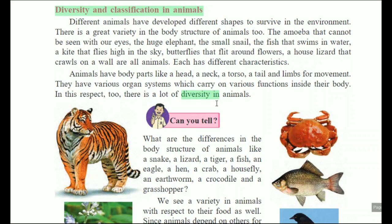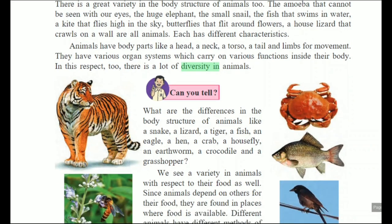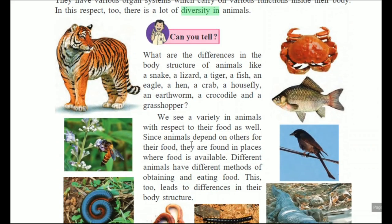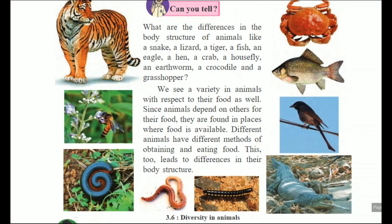Look at the diagram — you can see different species: tiger, honey bees, snails. If you observe carefully the body structure of these animals, each and every animal has a different body structure. Where food is available, they are found in those places. Different animals have different methods of obtaining and eating food, and these lead to differences in their body structure.